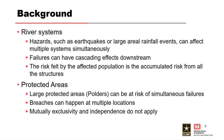A little background — there are several different things to consider for system risk. We have river systems where hazards such as earthquakes or large aerial rainfall events can affect more than one structure at a time. We're talking about very large regional storm events or large earthquake events such as a Cascadia event. It's very unlikely that only one structure would feel those hazards. Failures of structures can have cascading effects downstream. The risk felt by an affected population isn't just based on one structure — it may be based on several. Large protected areas, or polders, can be at risk of simultaneous failure, with breaches happening at multiple locations along a long levee system. In these scenarios, mutual exclusivity and independence don't apply.